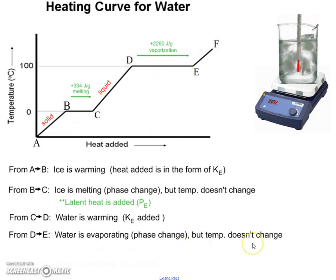But again, the temperature is not changing. Because it's not using the energy to get warmer. It's using the energy to change from a liquid to a gas. So again, we call that special energy latent heat. It's a form of potential energy.